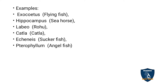Examples of Osteichthyes include: Exocoetus (Flying Fish), Hippocampus (Seahorse), Labeo rohita (Rohu — a very tasty fish), Katla, Echeneis (Suckerfish), and Pterophyllum (Angel Fish), which you have seen in most fish tanks.